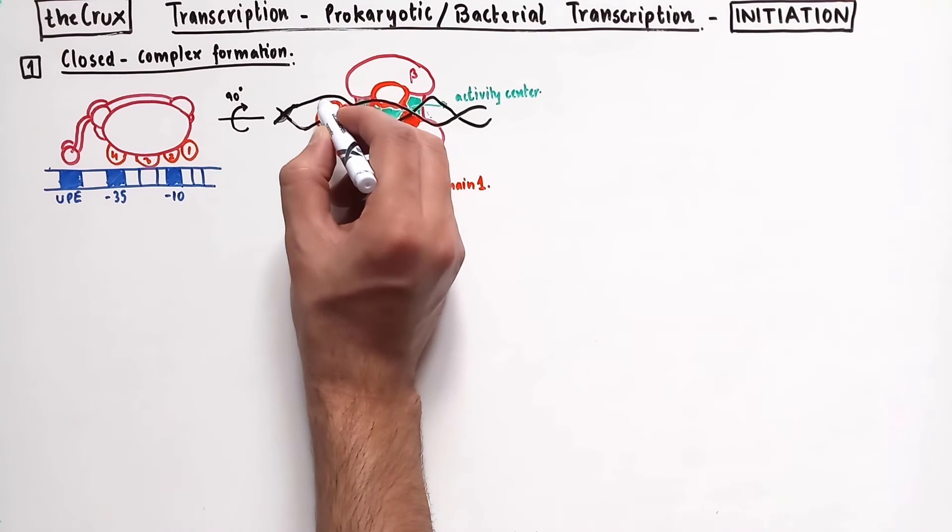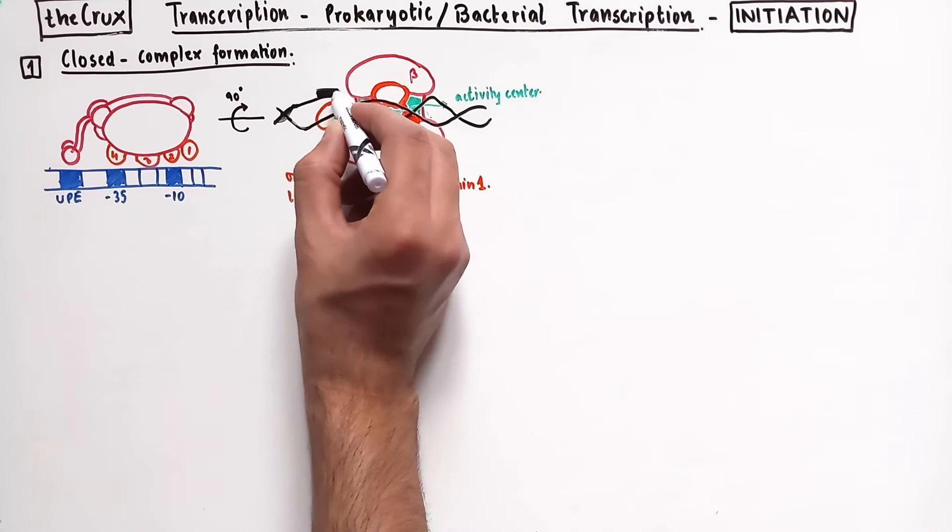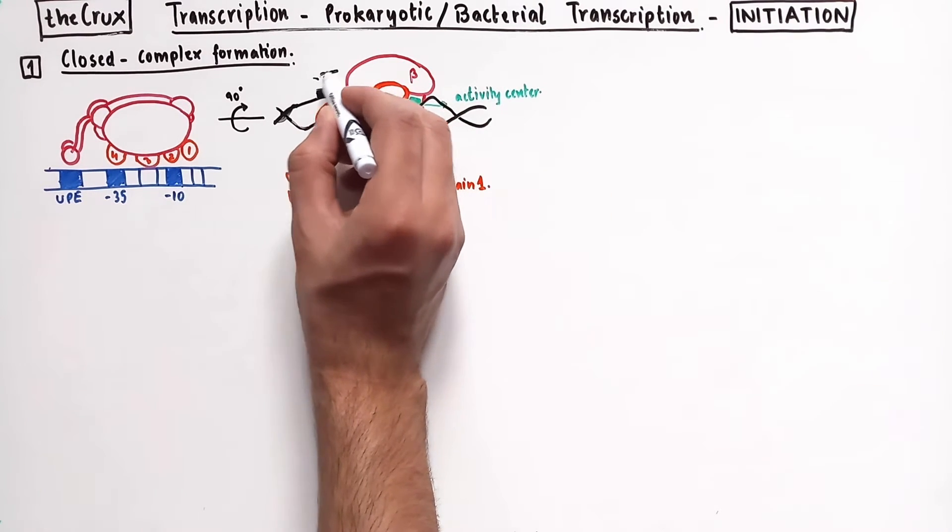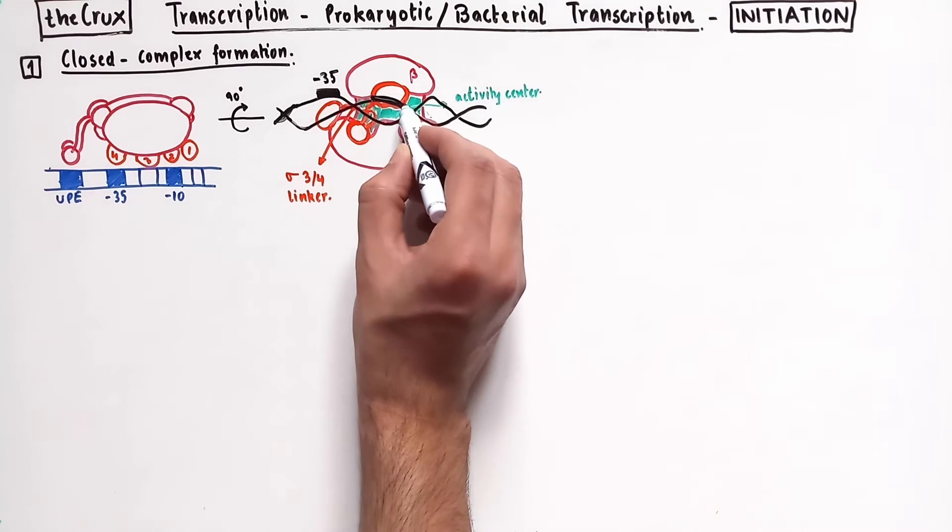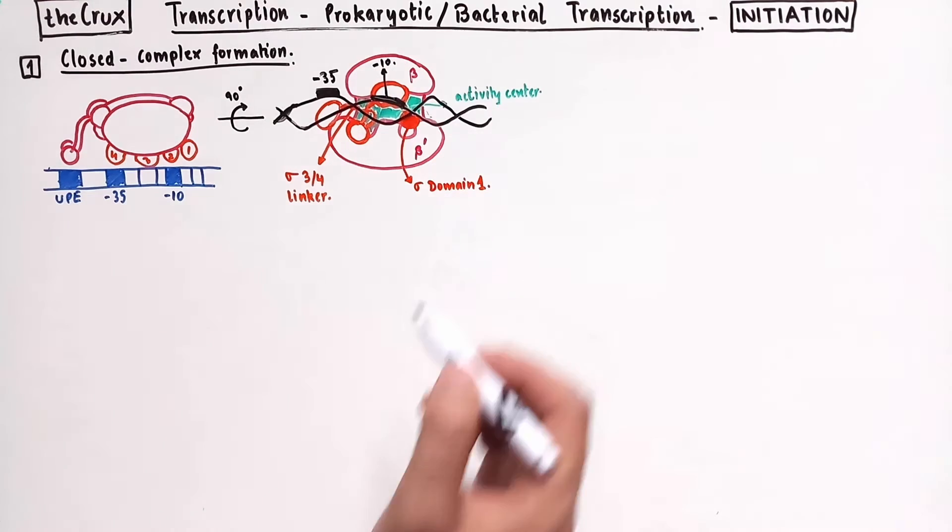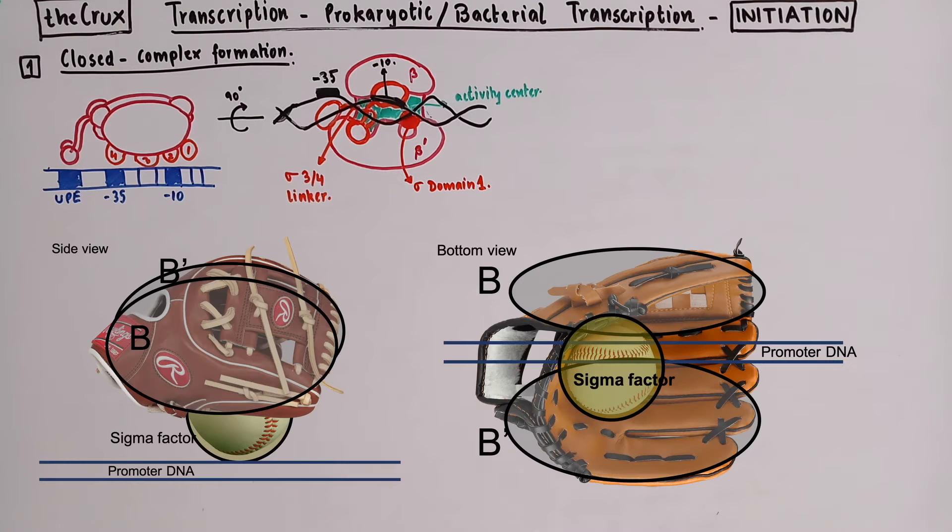Looking at the bound DNA in this conformation, we see that the negative 35 element is contacted by domain 4 and the negative 10 element is contacted by domain 2. To understand this rotation better, here's the analogy with the baseball glove.